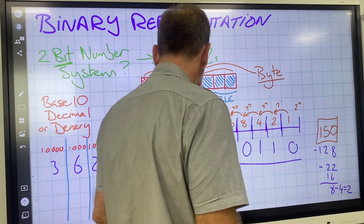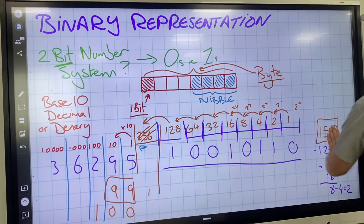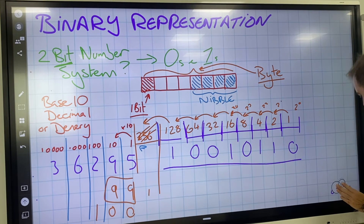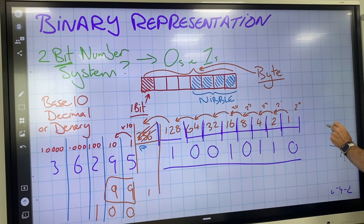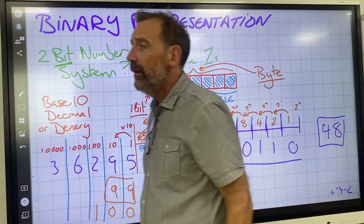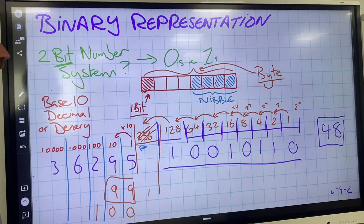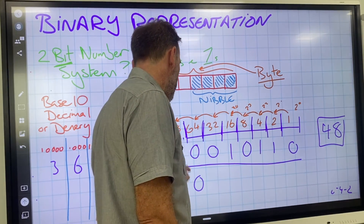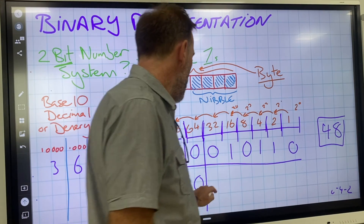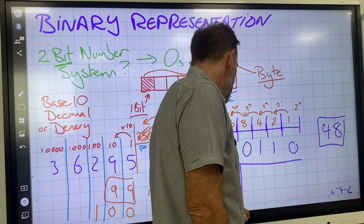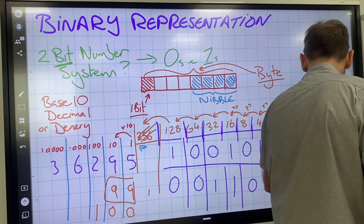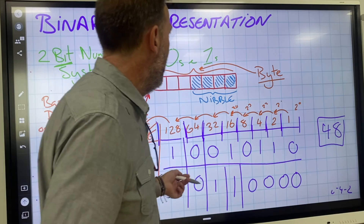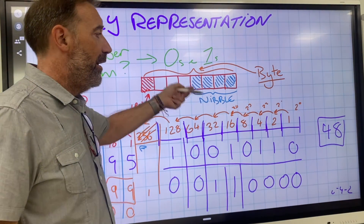Sticking with an 8-bit register, can you tell me what the number 48 looks like? In an 8-bit register it's going to be 0, 0, 1, 1, 0, 0, 0, 0. Most people miss the leading zeros, but we're in the register, so we've got to put them in. So that's how we convert binary to denary and denary to binary.